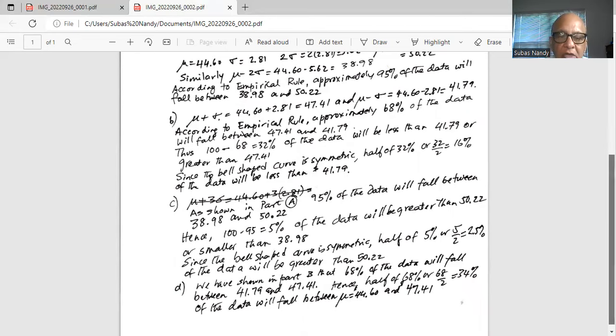area between 41.79 and 47.41 is approximately 68% and half of that or 68 divided by 2 is 34% will fall between 44.60 which is the mean and 47.41.